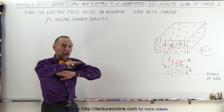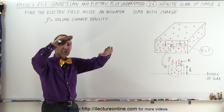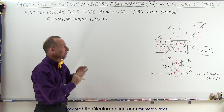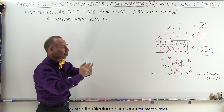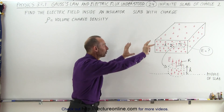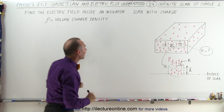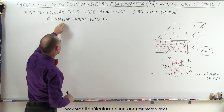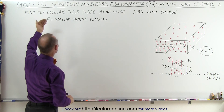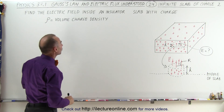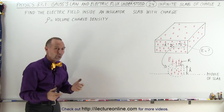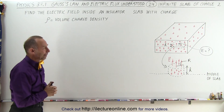So instead of having all the charge on the top surface and on the bottom surface of the slab, here we have the charge all distributed throughout the slab, in such a way that we have a volume charge density in terms of charge per unit volume. We use the Greek letter rho to indicate that.